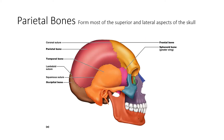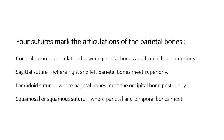The parietal bones form most of the superior lateral aspects of the skull. They articulate with the frontal bone via the coronal suture, with the temporal bone via the squamous suture, and with the occipital bone via the lambdoid suture. There's a sagittal suture between both parietal bones. A suture is a joint — a very tight sutural joint. Four sutures mark the articulations of the parietal bones: coronal, sagittal, lambdoid, and squamous.